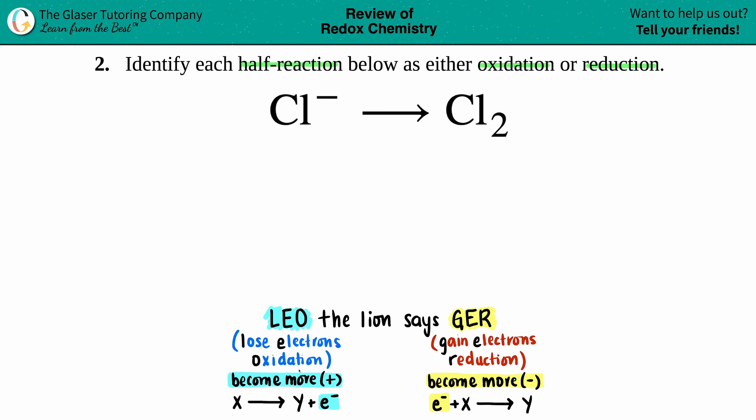On the flip side, the GER: gain electrons is always reduction. So gain electrons always reduction, and if you're gaining electrons, you're gaining negatives, you're going to become more negative.